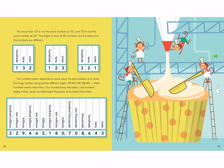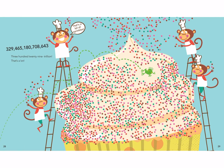You know that 132 is not the same number as 123, and 123 is not the same number as 321. The digits in each of the numbers are the same, but the numbers are different. Our number system depends on place value — it's what enables us to write a huge number using just ten different digits, zero through nine. That number is read 329,465,180,708,643. Each set of three numbers between the commas is known as a period. 329 trillion — that's a lot. That's a whole lot of sprinkles.